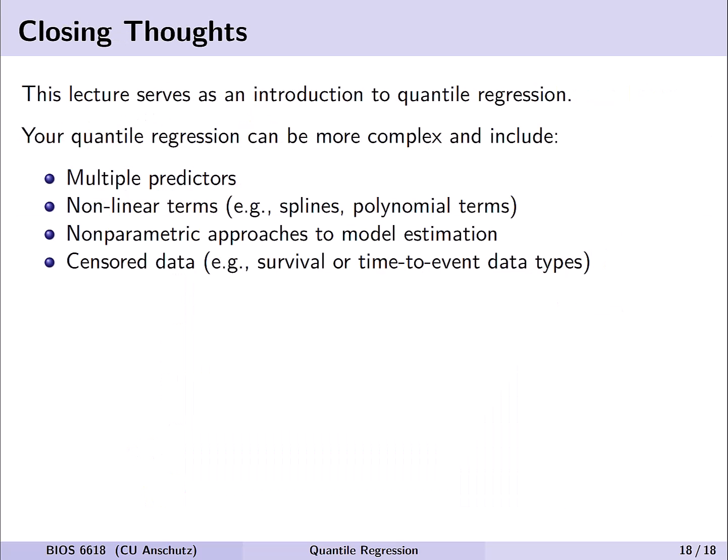So a few closing thoughts. This lecture serves as just an introduction to quantile regression as an alternative to linear regression, especially if our assumptions may be violated. Your quantile regression, although our example is simple, can be much more complex and include actually multiple predictors. It could also add those nonlinear terms like splines or polynomial terms. There's also nonparametric approaches to the estimation of quantile regression models. And models you can even use for censored data. Now, that's a bit out of the scope of our class, but I think it's helpful to be aware that there are alternatives and strategies here to use for different data types or strategies that you can explore more in the future. With that, thank you for your attention for this lecture. Look forward to chatting about more statistical topics in the next one. Thank you.